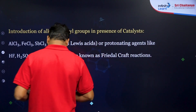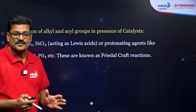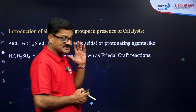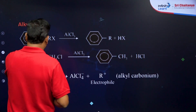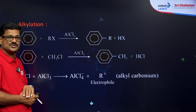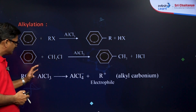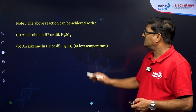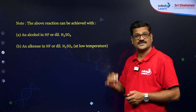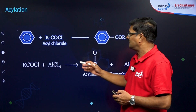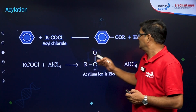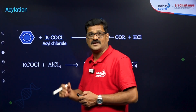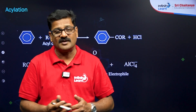Introduction of an alkyl group is called Friedel-Craft alkylation, and introduction of an aryl group is Friedel-Craft acylation. Benzene reacts with an alkyl halide in the presence of AlCl3 to give toluene or the alkyl benzene — AlCl3 acts as the Lewis acid electrophile. The reaction can also be achieved using HF and H2SO4. For acylation, acyl chloride reacts with benzene to give acyl benzene — the acylium ion is the electrophile. Friedel-Craft acylation is more preferred over Friedel-Craft alkylation.